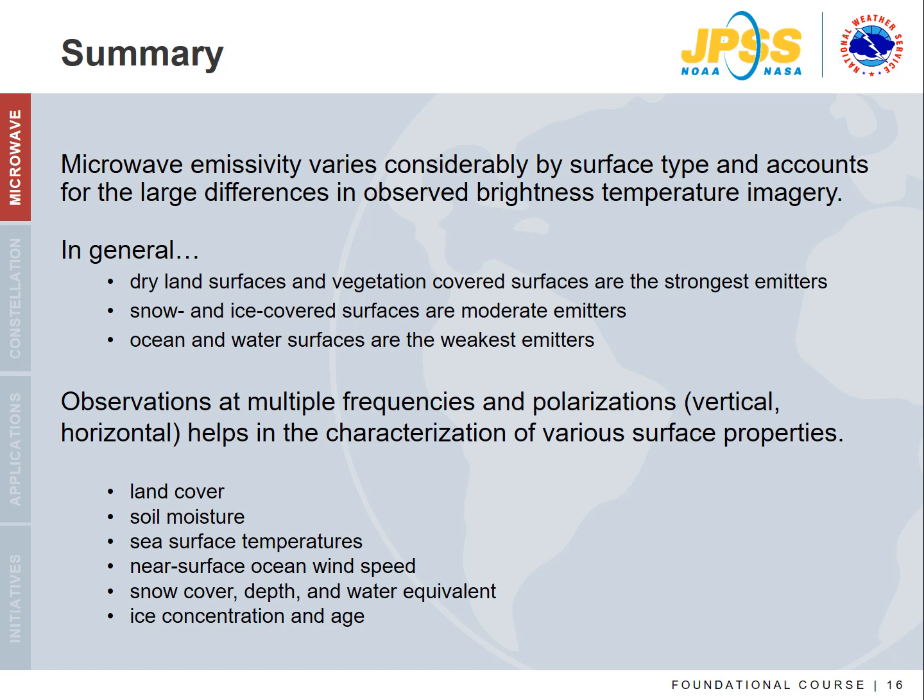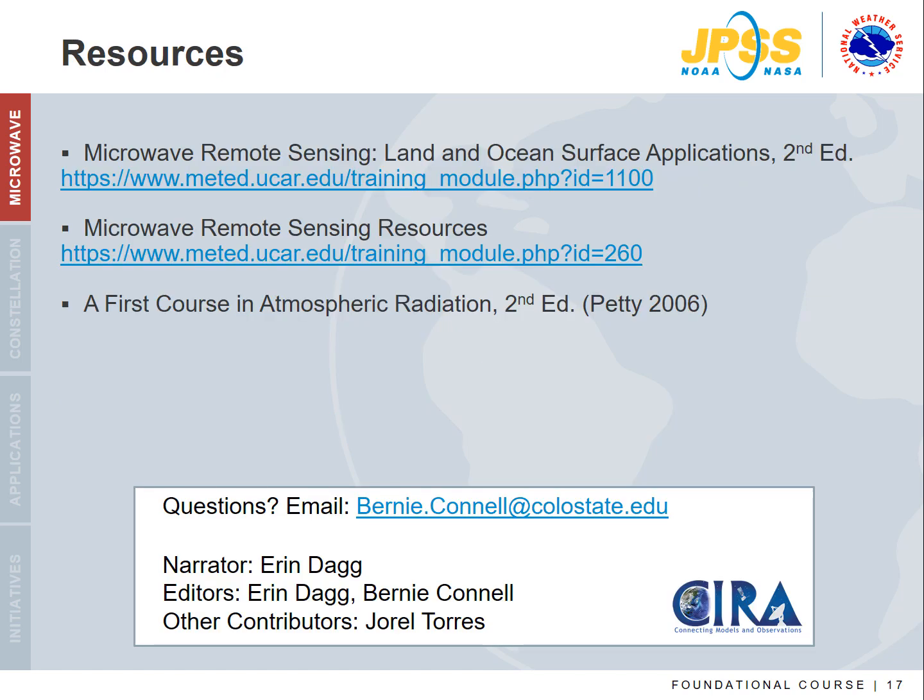The AMSR2 sea surface temperature and near-surface ocean wind speed products, as well as the 36 and 89 GHz channels for both vertical and horizontal polarizations, will be available in AWIPS. For more information, please visit the resources listed at the end of the module.